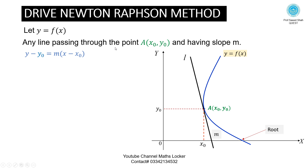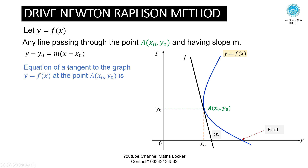Any line passing through the point A with coordinates (x₀, y₀) and having slope m has the equation: y - y₀ = m(x - x₀). This is the one-point form. The line L passing through point A is also a tangent to the graph y = f(x) at the point A(x₀, y₀).